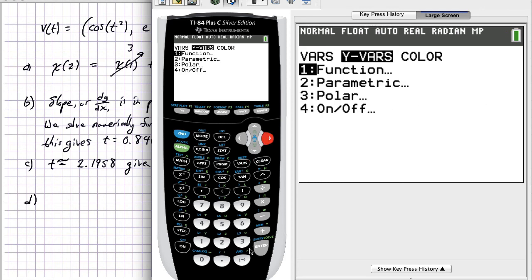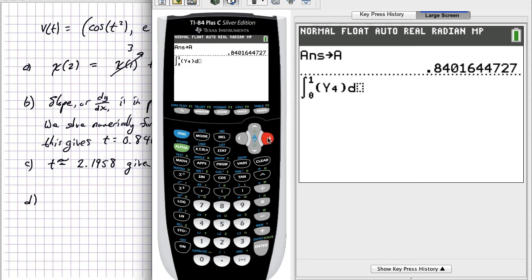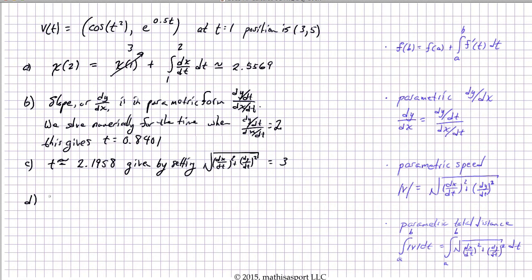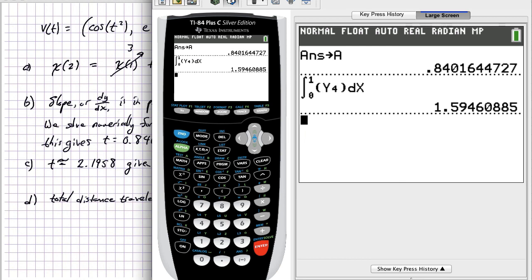And y4, and the variable that we're integrating with respect to is t, but we've represented it by x, and we get 1.5946. So let's just write that out. Total distance traveled is the integral from 0 to 1 of the square root of dx/dt squared plus dy/dt squared, and that's approximately equal to 1.5946.